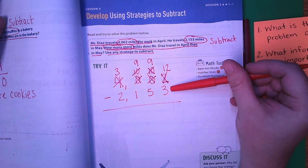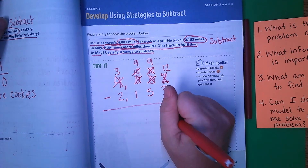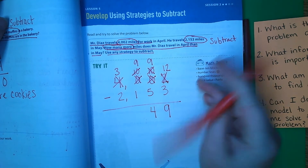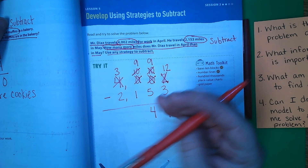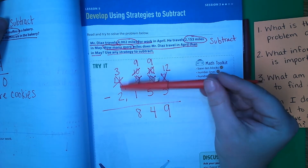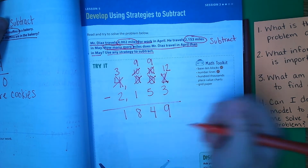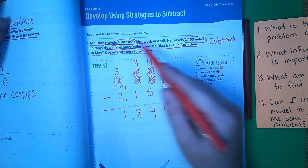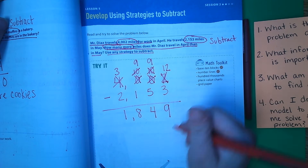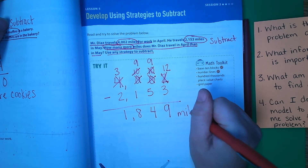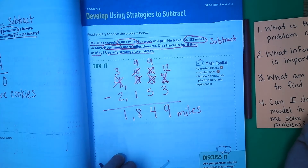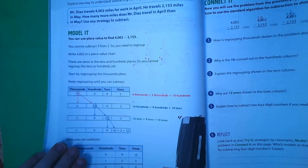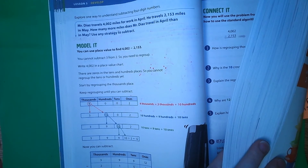So we have lots of regrouping in this number. Now can we do twelve minus three? Yes. Twelve minus three is nine. Nine minus five is four. Nine minus one is eight. Three minus two is one. Don't forget your comma. And then this says miles up here, so it's one thousand eight hundred and forty-nine miles.